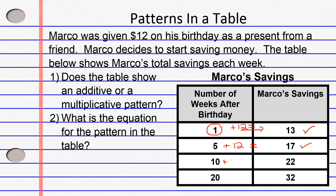Can we add 12 to 10 and get 22? We sure can. And 20 plus 12 — does that equal 32? It does. So in this case, it's an additive pattern because we can add 12 to each of the numbers on the left-hand side of our column to get to the number on the right-hand side. So does this table show an additive or multiplicative pattern? In this case, it's an additive pattern.